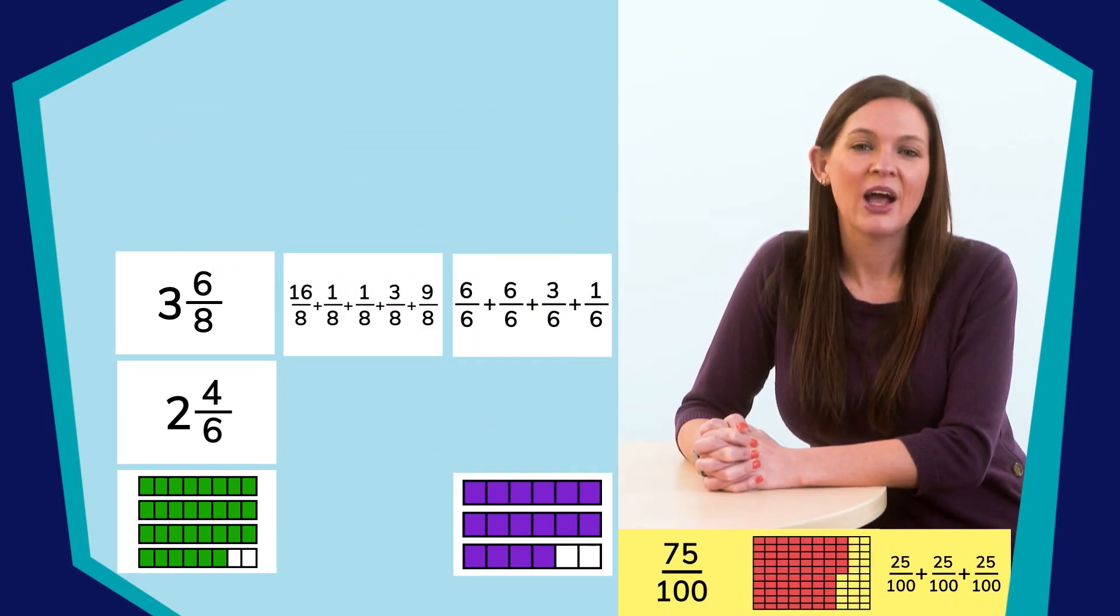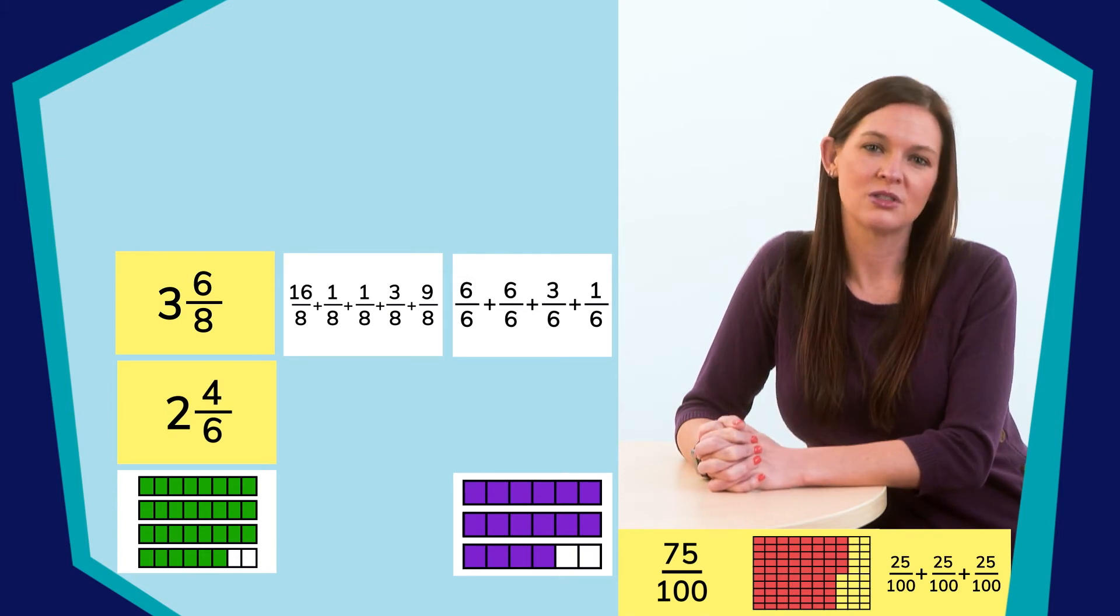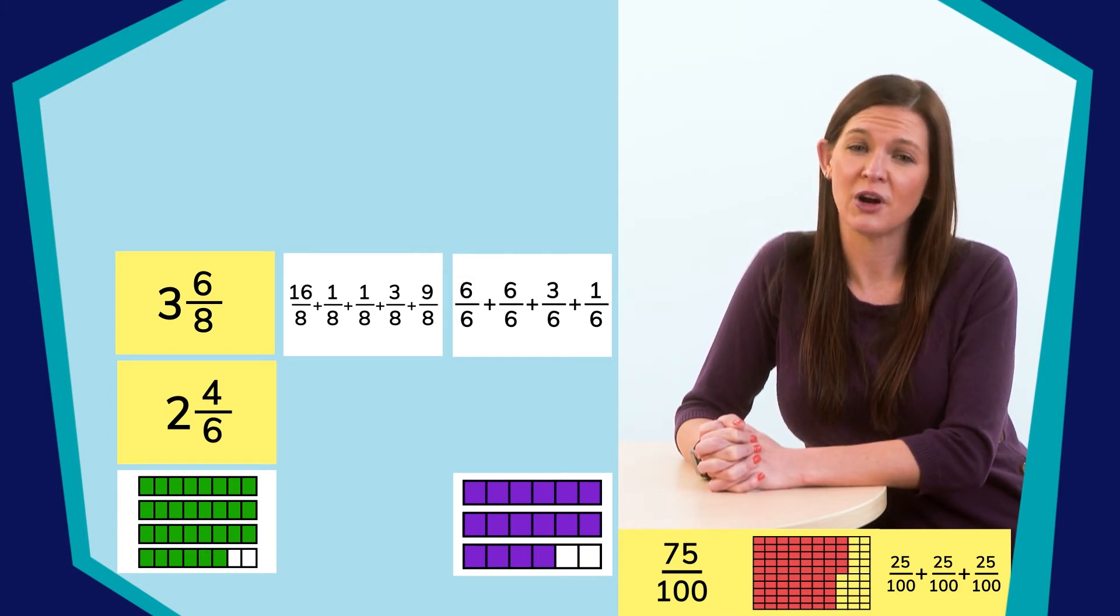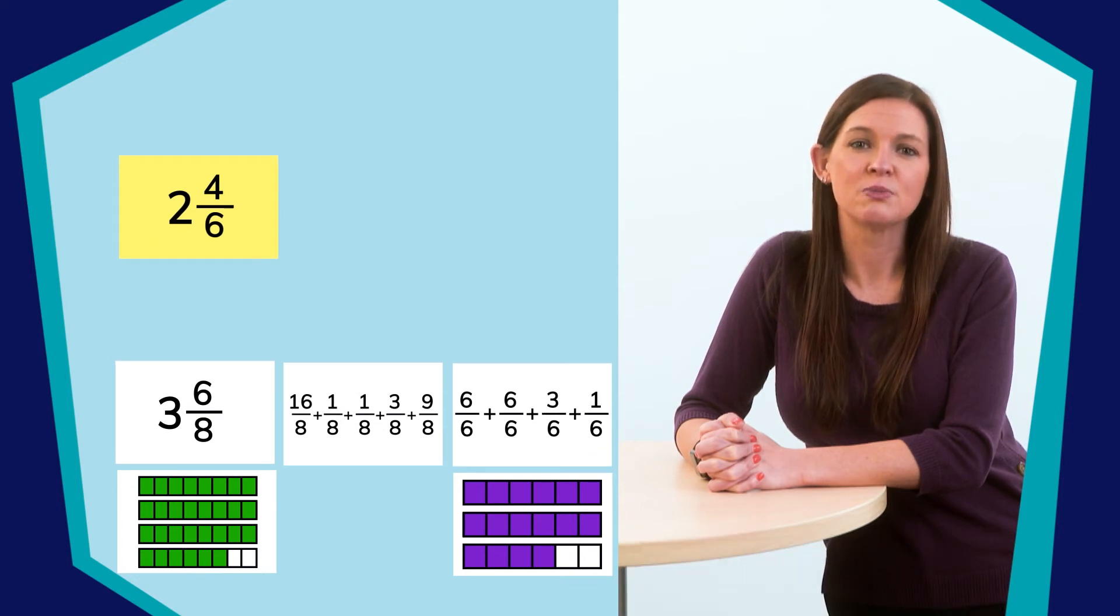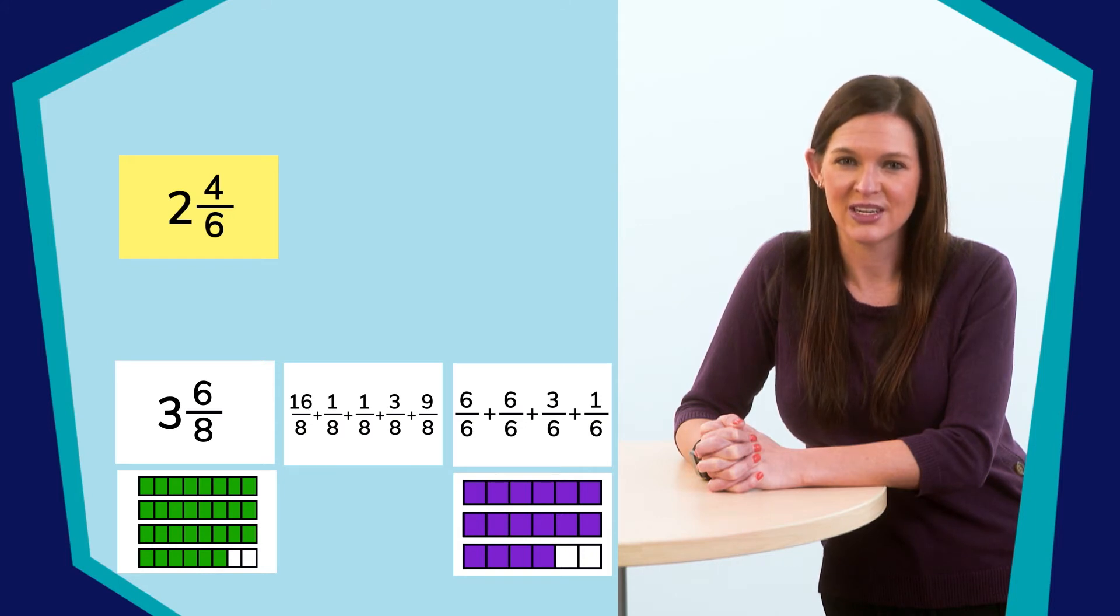Okay, two more to go. Now, both of these are mixed numbers, so let's try the smaller one first. Two and four-sixths. I know it's smaller because both of the fractions are proper fractions, and the whole number is two. The whole number two is smaller than the whole number three. Okay, which model has two wholes and four-sixths? Here it is.